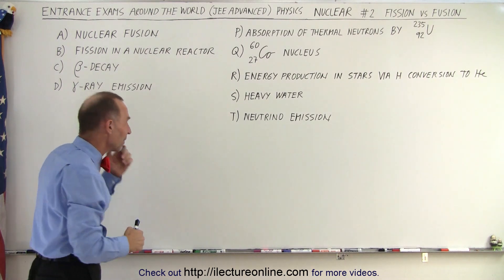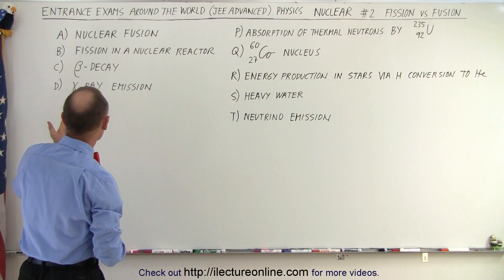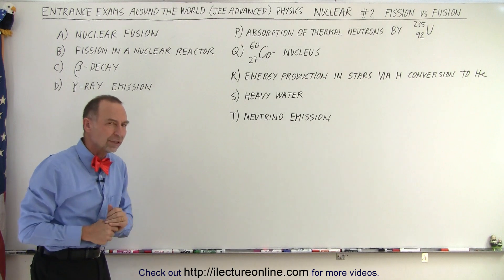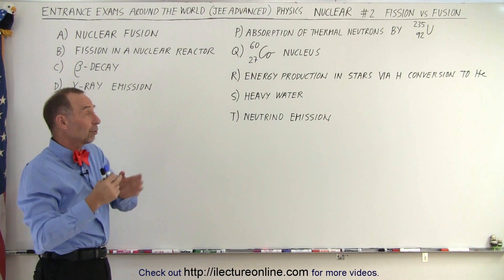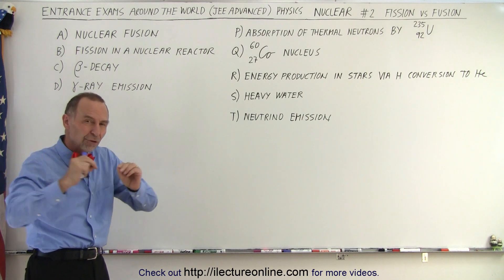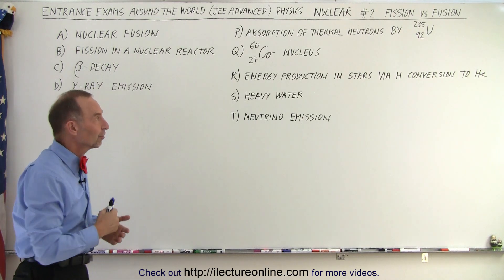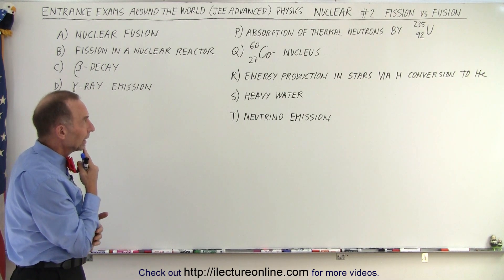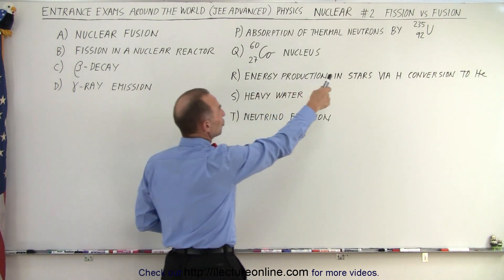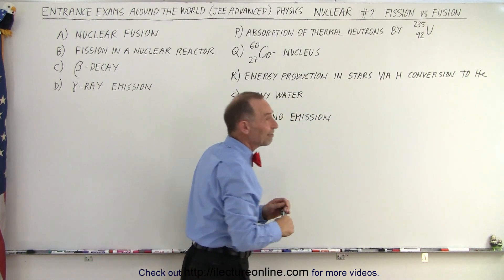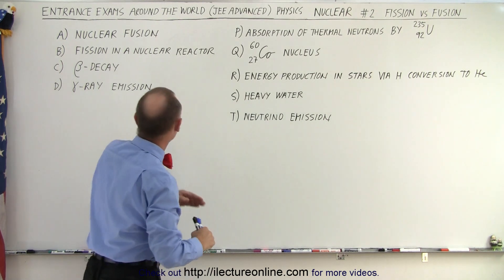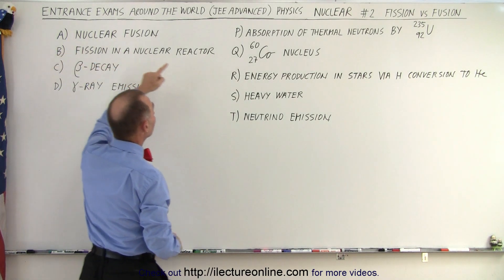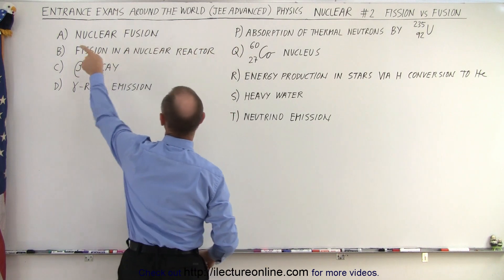Let's read them one at a time and see what we can determine. First of all, nuclear fusion. That's where we take small elements and we fuse them together into heavy elements. Is it absorption of thermal neutrons by uranium-235? No, that causes uranium-235 to fission, not fusion. So therefore, P is not appropriate for A.